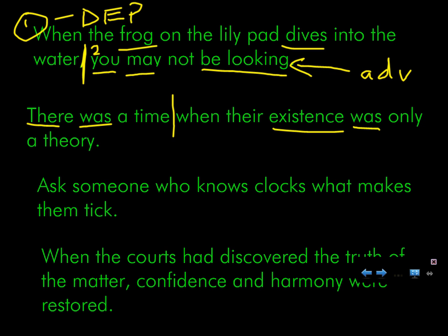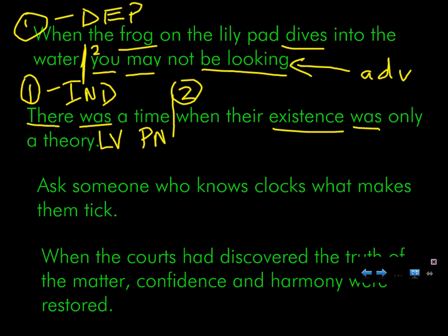Which of those is independent and which is dependent? Which stands on its own and which really needs other information? No, you reversed them. So, one right here is independent: there was a time. Now, Regia, you might look at me and say, but that, I need more information. That's true, but grammatically it's intact. I've got my subject, my predicate, it's a linking verb, which makes this a predicate nominative. It's intact. Here, it's dependent. And what word makes it dependent? When. Because when is a subordinating conjunction that begs for it to connect to something else.